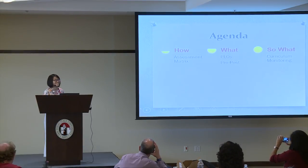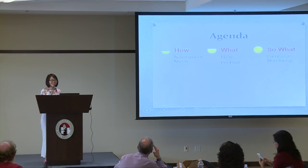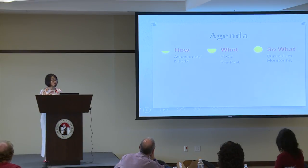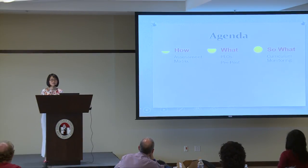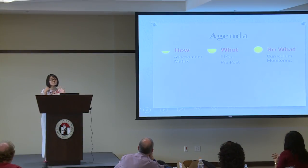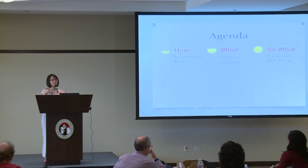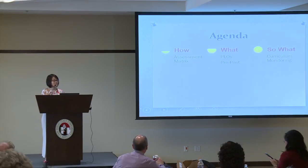Three things I'll be talking about: how, what, and so what. First, I'll walk you through the history of how we developed the process through which to assess student success — the assessment metrics. Then I'll talk about the specific program learning outcomes we have developed, and then the extent to which we use those implications from our assessment to update and monitor our curriculum.